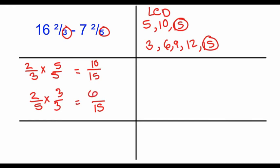Okay, so our two new fractions are going to be 10 fifteenths minus 6 fifteenths. Those have common denominators, so we can go ahead and subtract these. 10 minus 6 is 4, and our denominator stays the same.